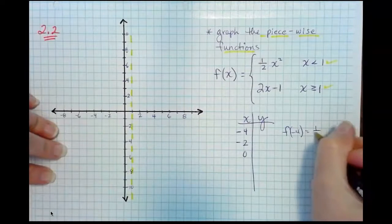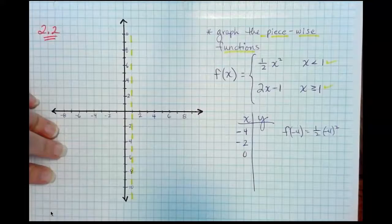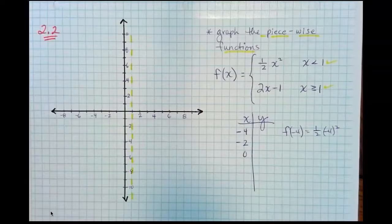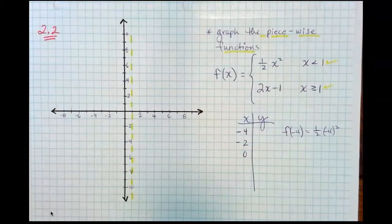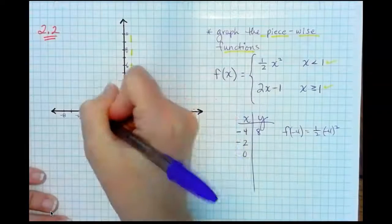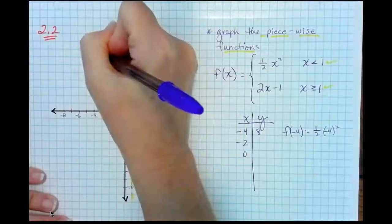So what is f of negative 4? Well, x must be less than 1, so negative 4 is less than 1. That means I'm going to use the top function here. So 1 half of negative 4 squared. I'm going to follow order of operations, which means I'm going to square first, get 16, take half of that, and get 8. So we have a point at negative 4, 8.